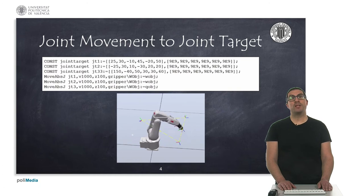Here we can see an example of code that makes the robot move to three specific joint target positions, and you can see the movements are non-linear.